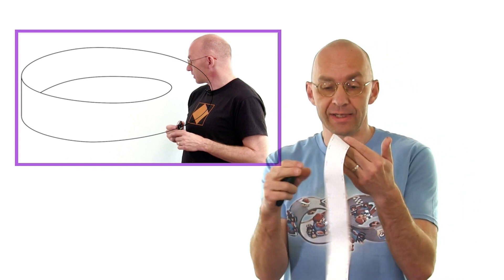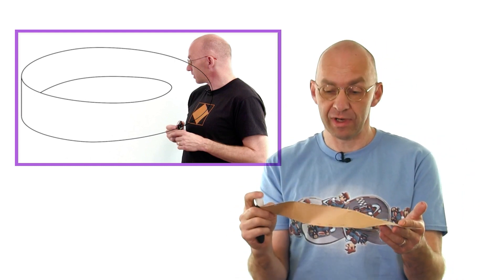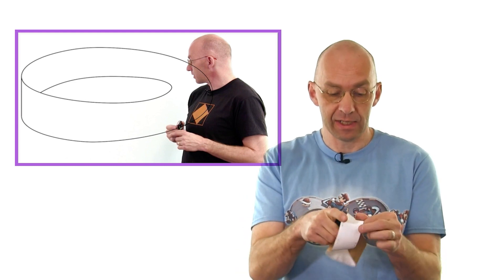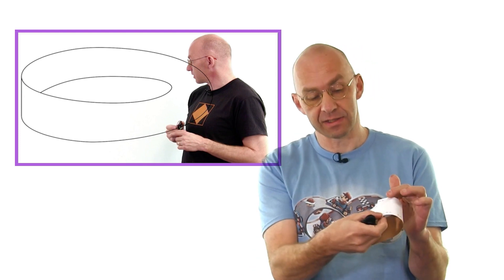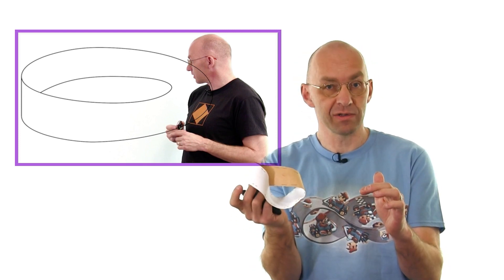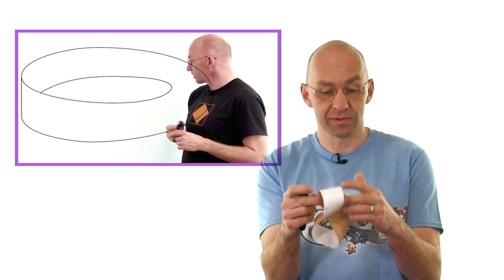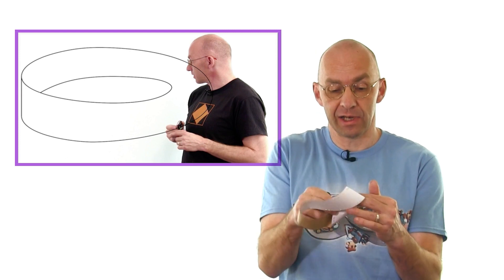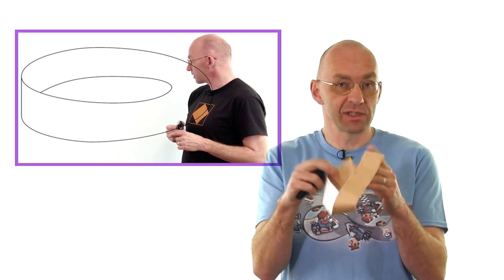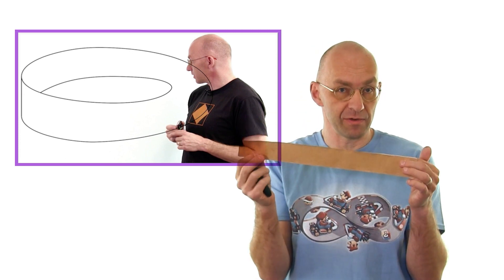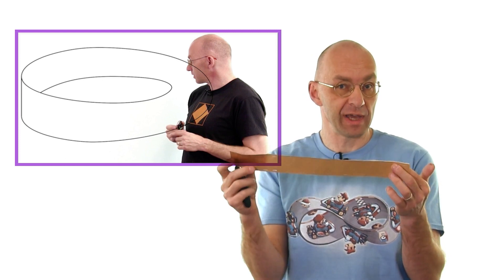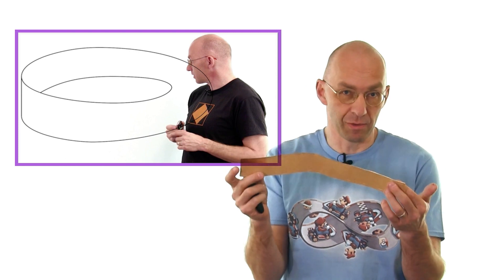So that's a Möbius strip — just one twist. If you give the whole thing two twists, the white side gets connected to the white side and the brown side to the brown side — that's not a Möbius strip. If you give it three twists, it has that property again. In general, if you give this thing an odd number of twists and bring the two ends together, you've got a Möbius strip. An even number of twists means it's not a Möbius strip.